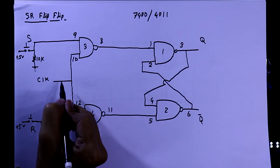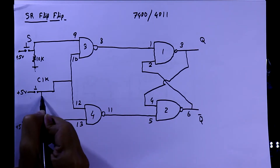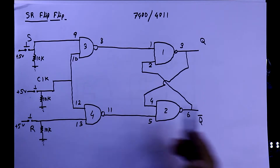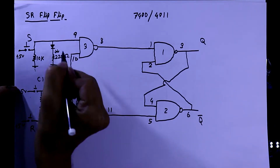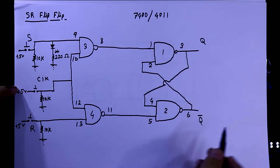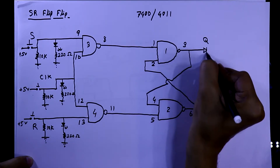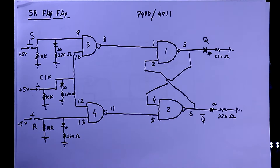As the other input is also an input, we have to connect a switch and a pull-down resistor there as well. Now to see the input and output we will connect LEDs. We have to connect LEDs with all the inputs and the outputs.